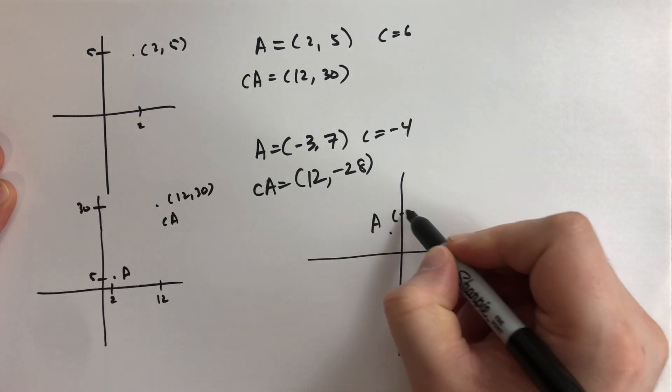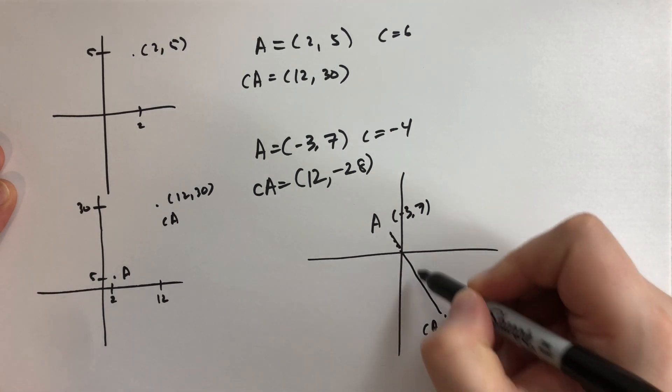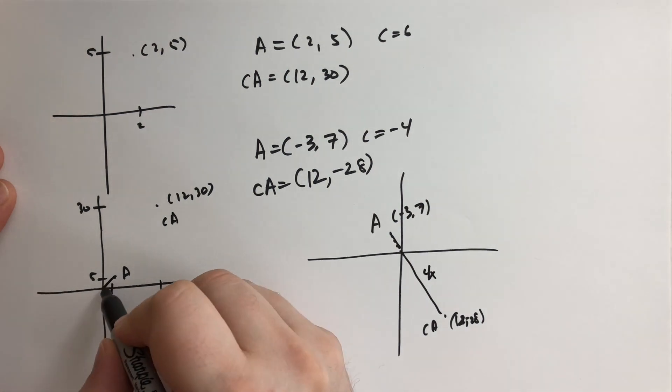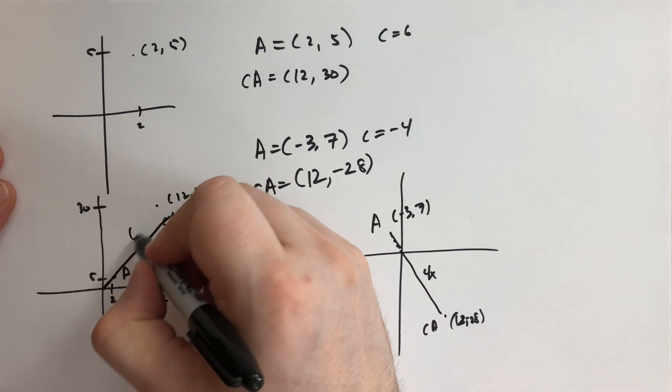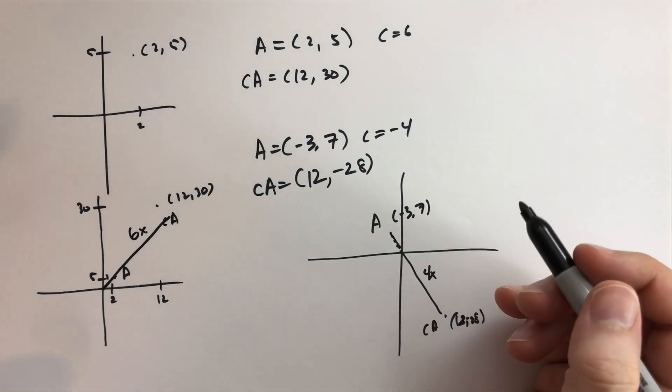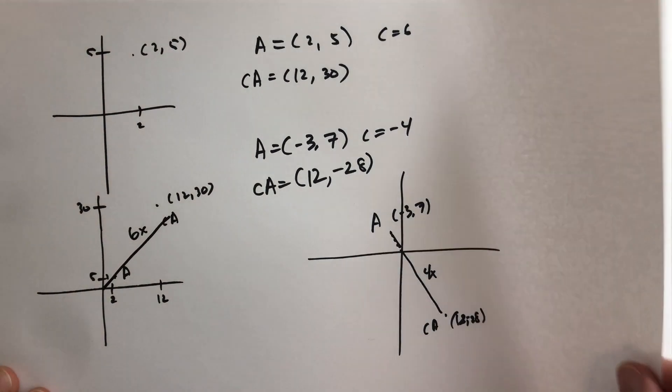A is at minus 3 comma 7. So we've gone here, we've taken this distance here and it's gone the same direction four times. This one here we've taken that distance and now it's up there at six times. So this is one, this is six times that. That's basically what's happening when we are multiplying points by numbers.